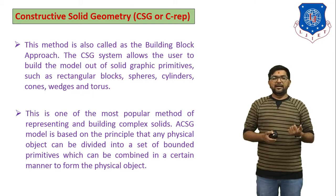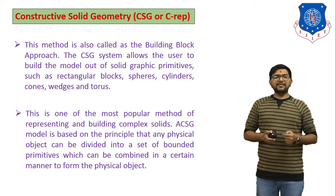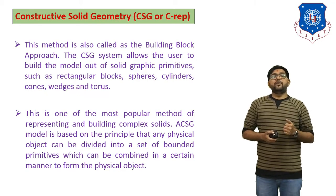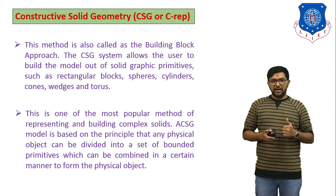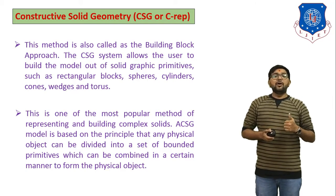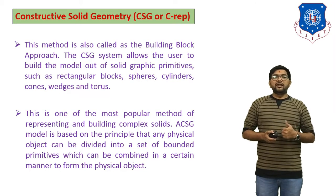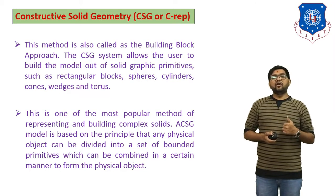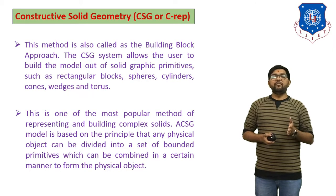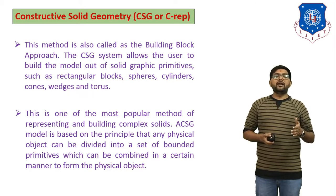sphere, cylinder, cord, wedges, and torus. This is one of the most popular methods of representing and building complex solids. The CSG model is based on the principle that any physical object can be divided into a set of bounded primitives which can be combined in a certain manner to form the physical object.